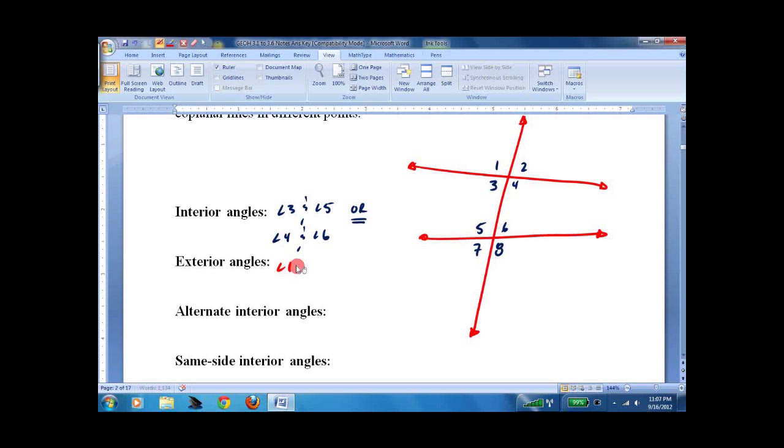Exterior angles then, of course, would be angle 1 and angle 2. I'm gonna get rid of the word. We usually talk about them in pairs. Angle 7 and angle 8.